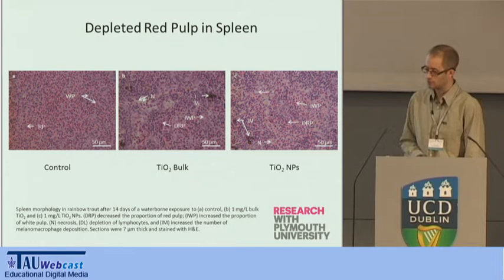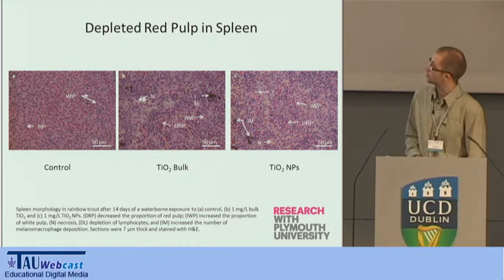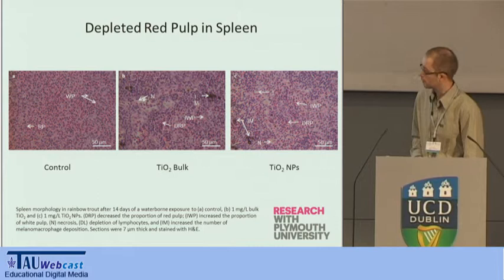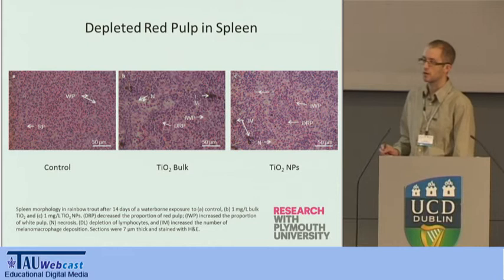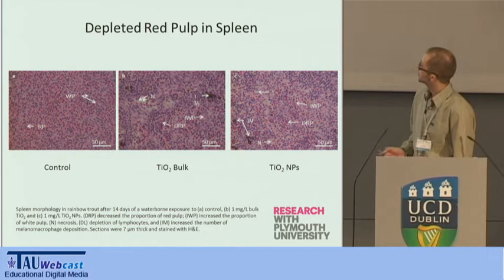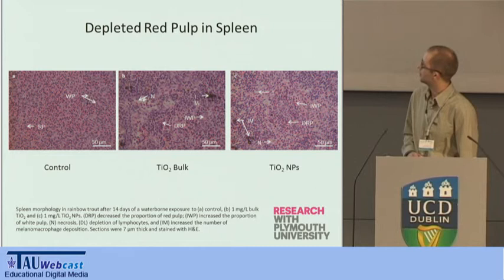This is also consistent with what we see at the spleen. A control animal's spleen shows clearly the areas associated with the red and white pulp; the spleen also has some immune function. In fish exposed to titanium dioxide, there's a depletion of the red pulp — red blood cells moving out and being released into the circulation as part of this compensatory mechanism for the respiratory distress. There's also some appearance of melanomacrophages, perhaps mopping up debris caused by tissue damage.